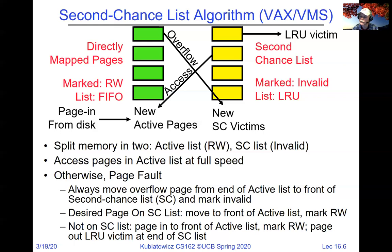The green list is FIFO because we can't do any better — since those pages are mapped as valid and writable, loads and stores just go there automatically with no observable access pattern information. There's nothing we can use to rearrange them. The yellow second chance list can be managed as true LRU because the only time we ever touch it is on a page fault, so we're running software and can maintain the ordering precisely.